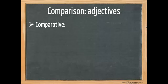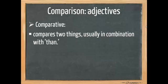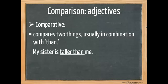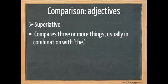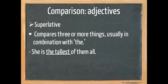What is a comparative? A comparative compares two things usually in combination with the word then. My sister is taller than me. The superlative compares three or more things usually in combination with the. She's the tallest of them all. So where the comparative only compared me and my sister, with the superlative, my sister is compared to everyone and we have concluded that she's the tallest.